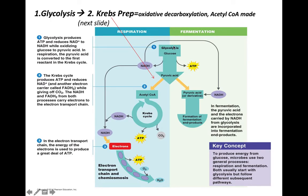In glycolysis, the cell sacrifices 2 ATP to make 4 ATP, for a net gain of 2 ATP. Four high-energy electrons are stripped from glucose and passed to two NAD, making two reduced NADH. The six-carbon glucose is broken into two three-carbon pyruvic acids.